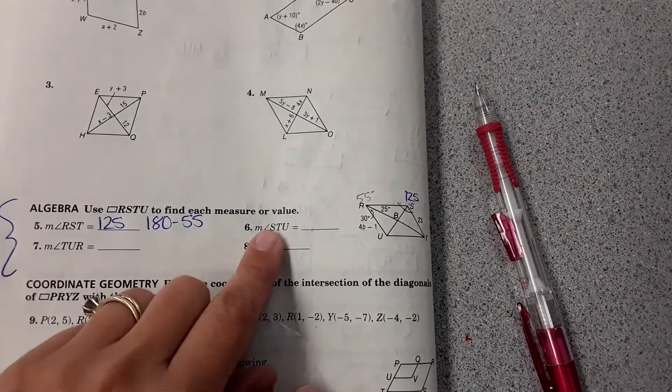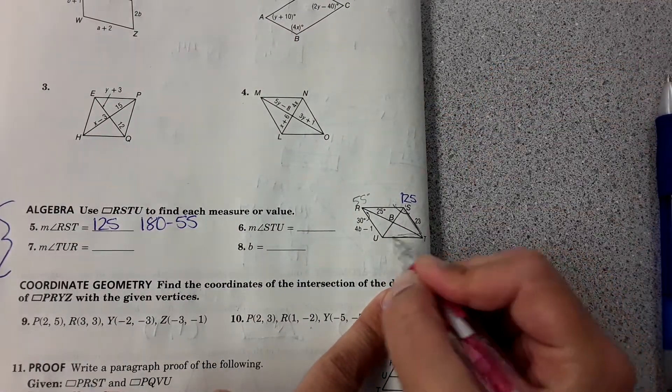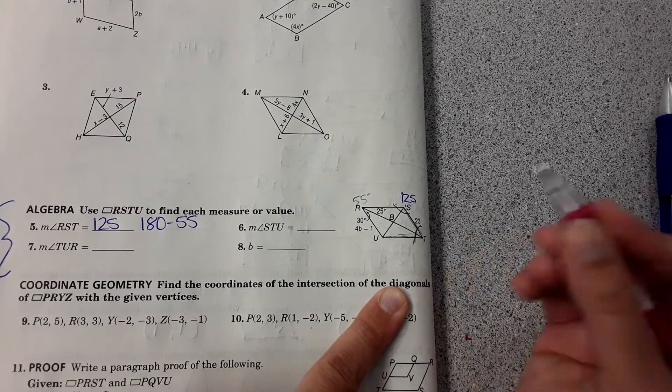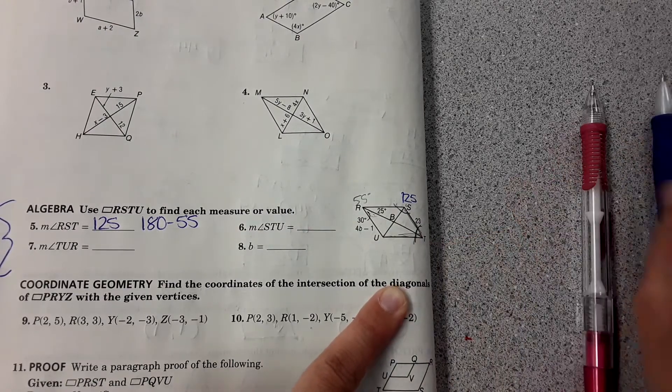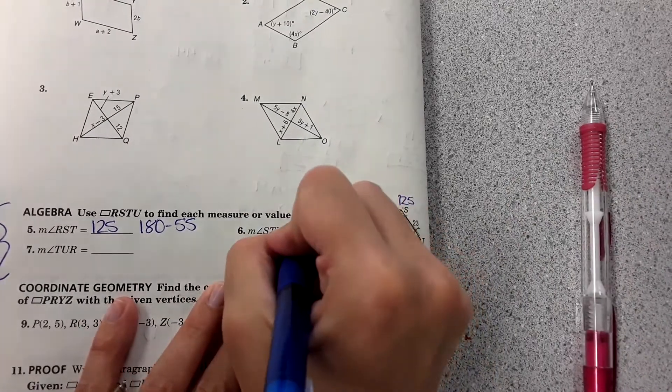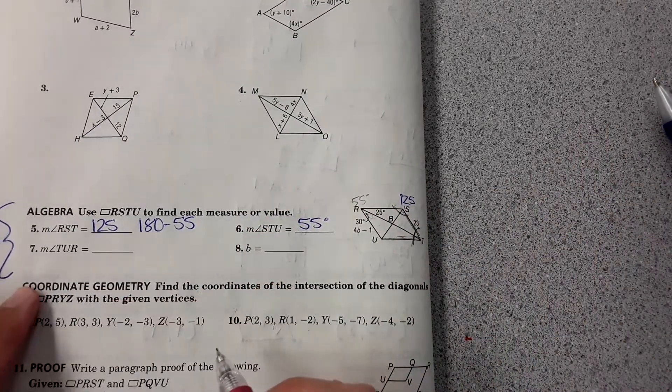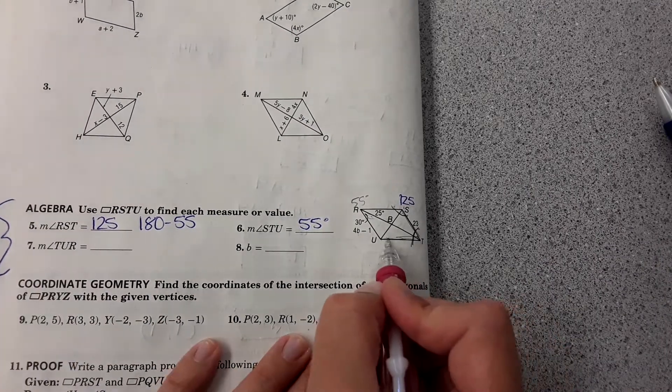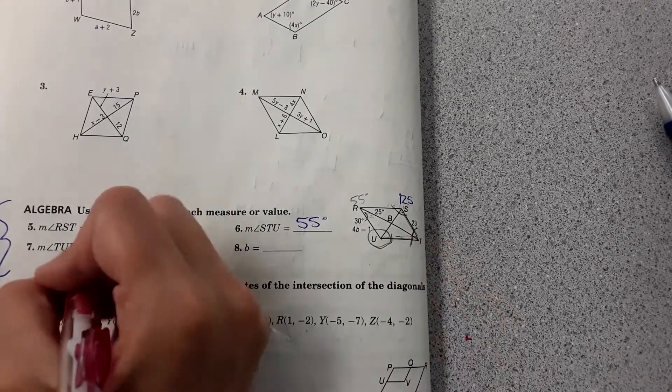Then the next one, measure of STU. STU, this angle right here, it is opposite that angle, so it must be the same measure. So it has to be 55 degrees.